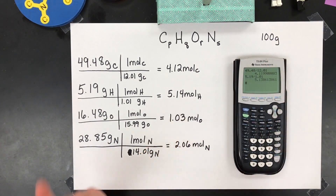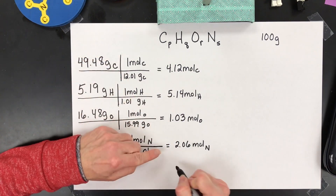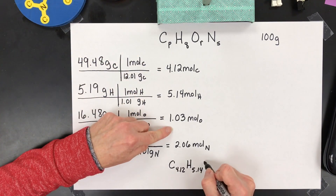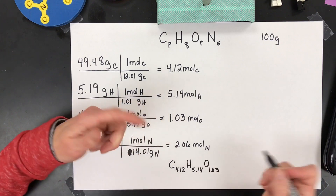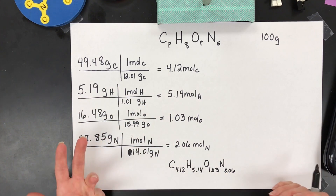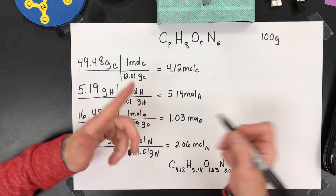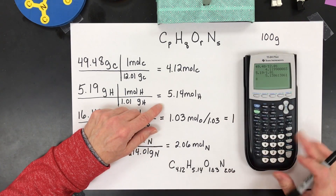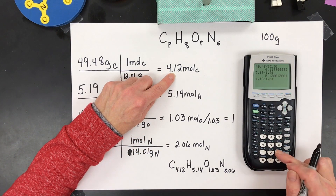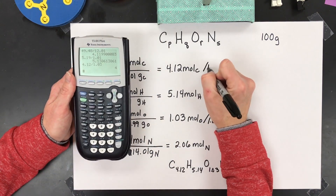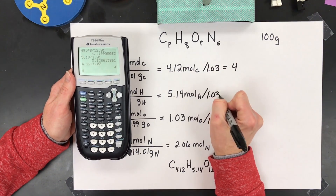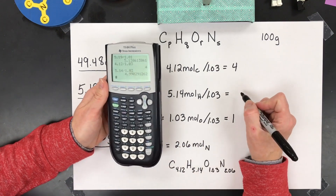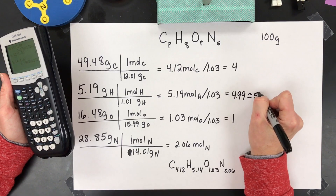Next, you're going to divide these by the smallest one. If you stopped right now, you'd have 4.12 carbon, 5.14 hydrogen, 1.03 oxygen, and 2.06 nitrogen — that is not a simplest ratio, not an empirical formula. So the next step is to divide them all by the smallest, which is 1.03. Dividing 4.12 by 1.03 gives us 4. Dividing hydrogen by 1.03 gives us 4.99, which we round to 5.